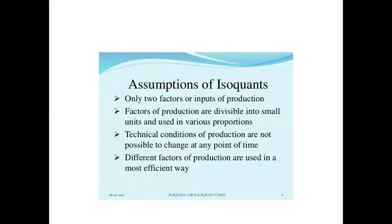Now let's see the assumptions. First, only two factors or inputs of production are considered: labor and capital. Second, factors of production are divisible into small units and used in various proportions, meaning they can be varied according to production requirements. Third, technical conditions of production are not possible to change at any point in time — the technicalities remain the same, only the factor quantities can be altered. Fourth, different factors of production are used in the most efficient way as per the need.